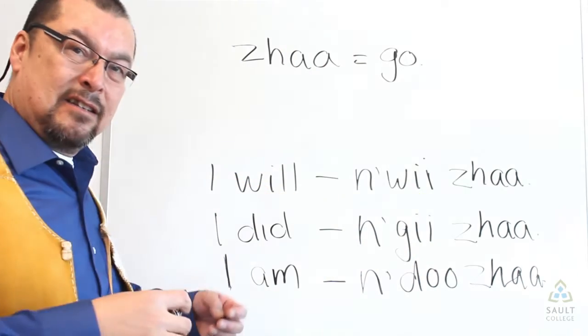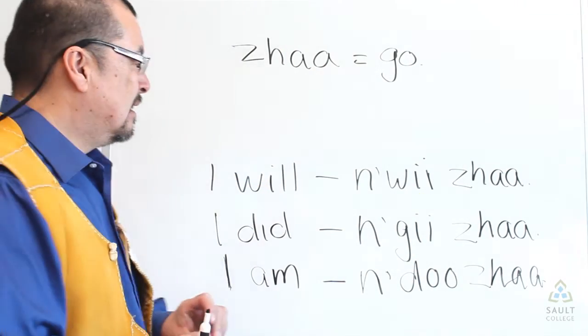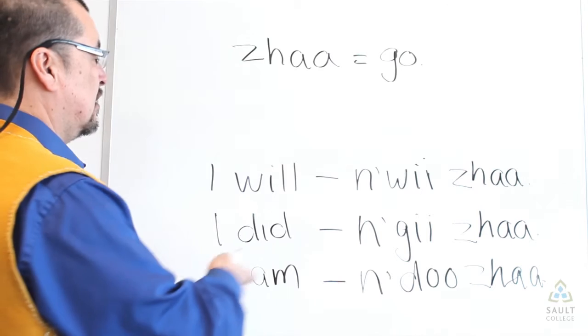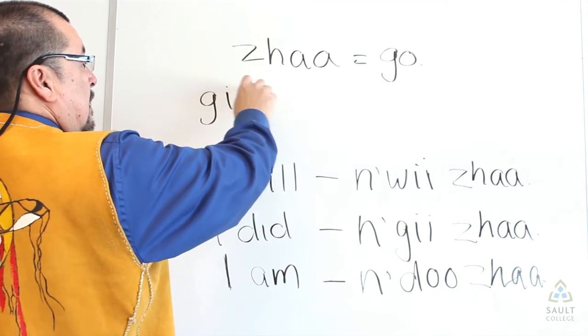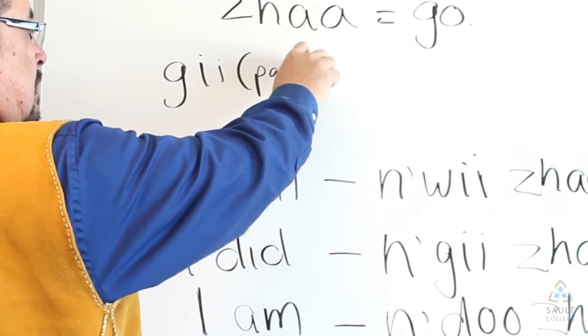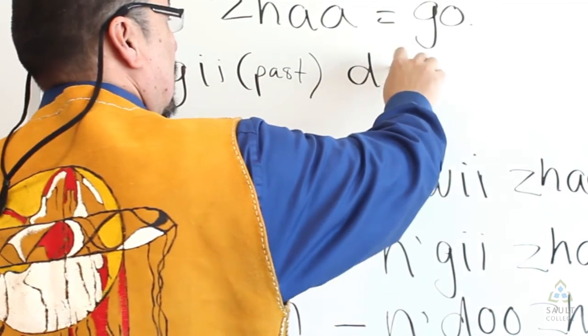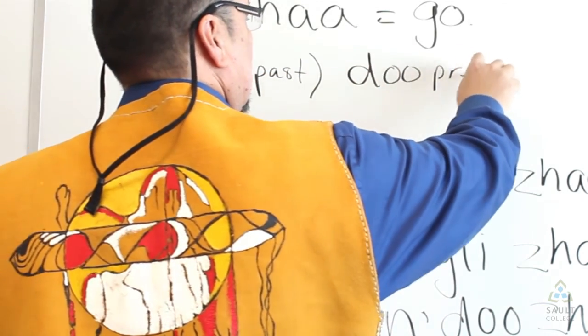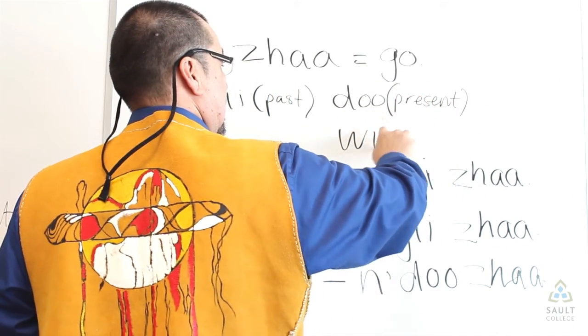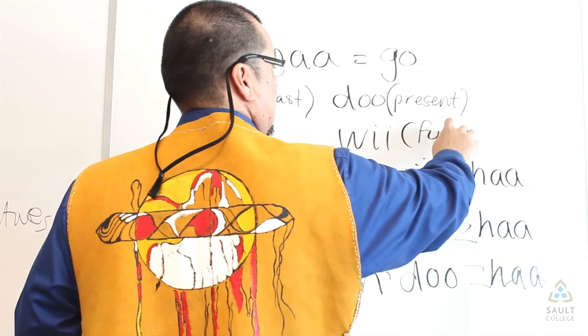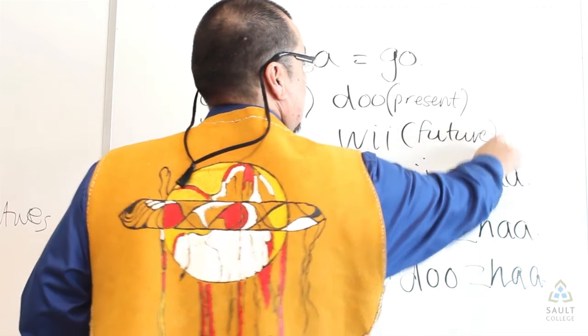Again, just for the sake of simplicity, you're combining your tense structures of gi, the past, past, doo, present, and wi. Future.